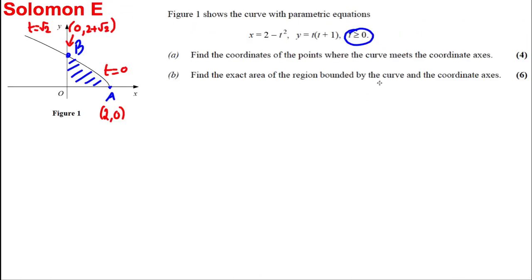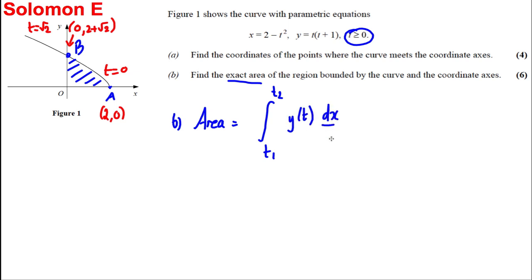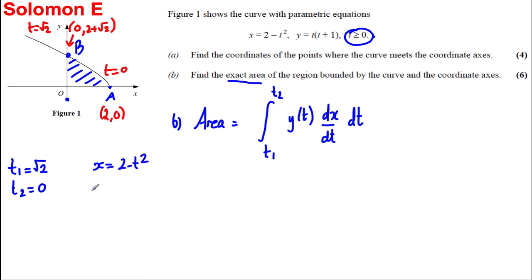For part B, we find the exact area using the parametric area formula: Area = ∫ from t₁ to t₂ of y(t) · (dx/dt) dt. We integrate from x at point B to x at point A, so t₁ = √2 and t₂ = 0. Since x = 2 − t², dx/dt = −2t.